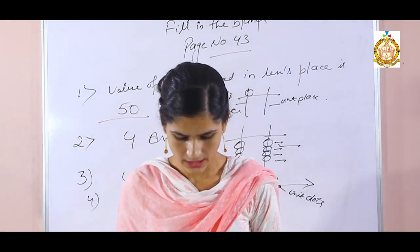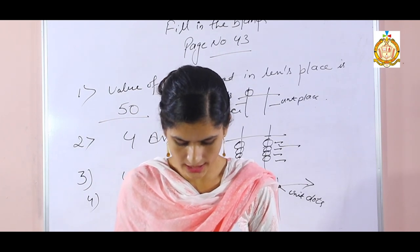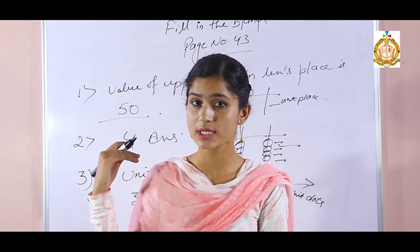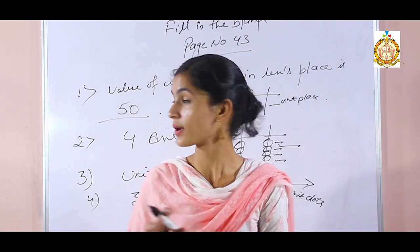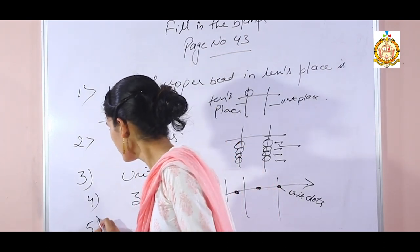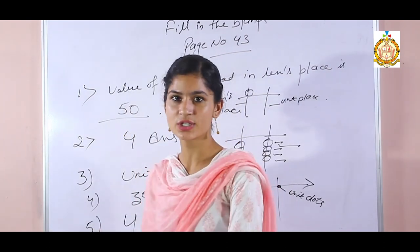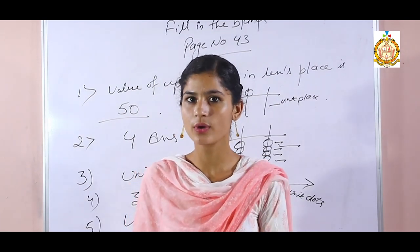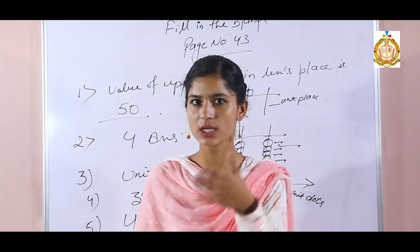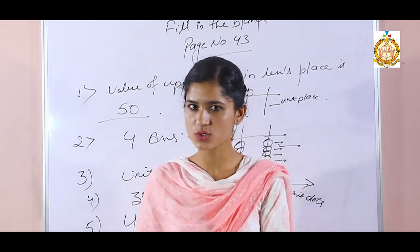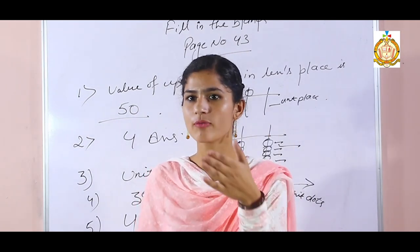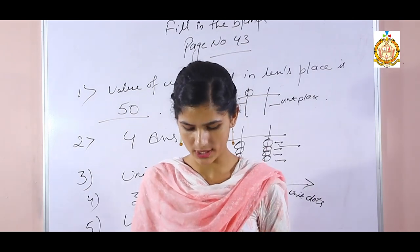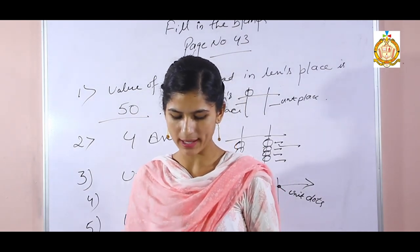Fifth fill-in: there are dash formulas for addition of small friends. How many formulas are there? There are 4 formulas of addition. Plus 1, plus 5 minus 4. Plus 2, plus 5 minus 3. Plus 3, plus 5 minus 2. Plus 4, plus 5 minus 1. These are the 4 formulas.